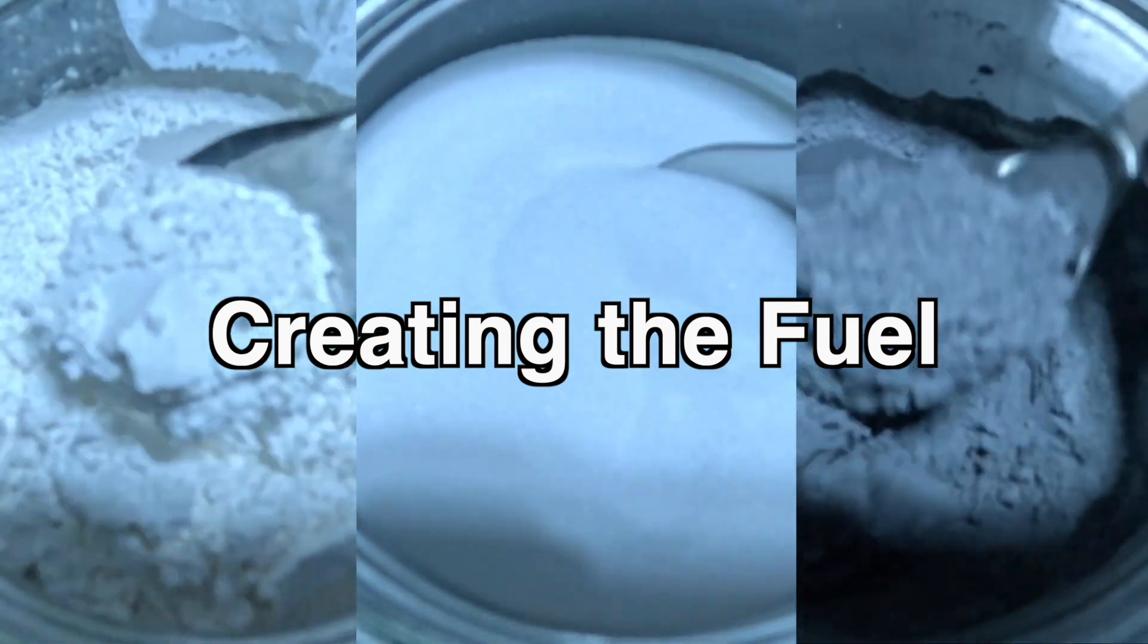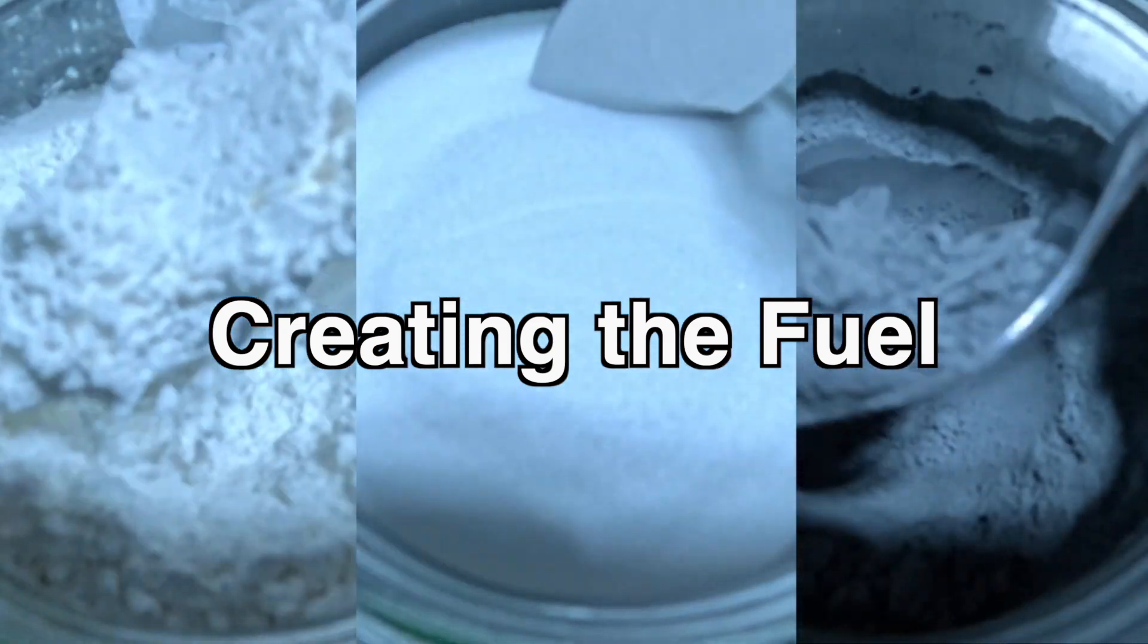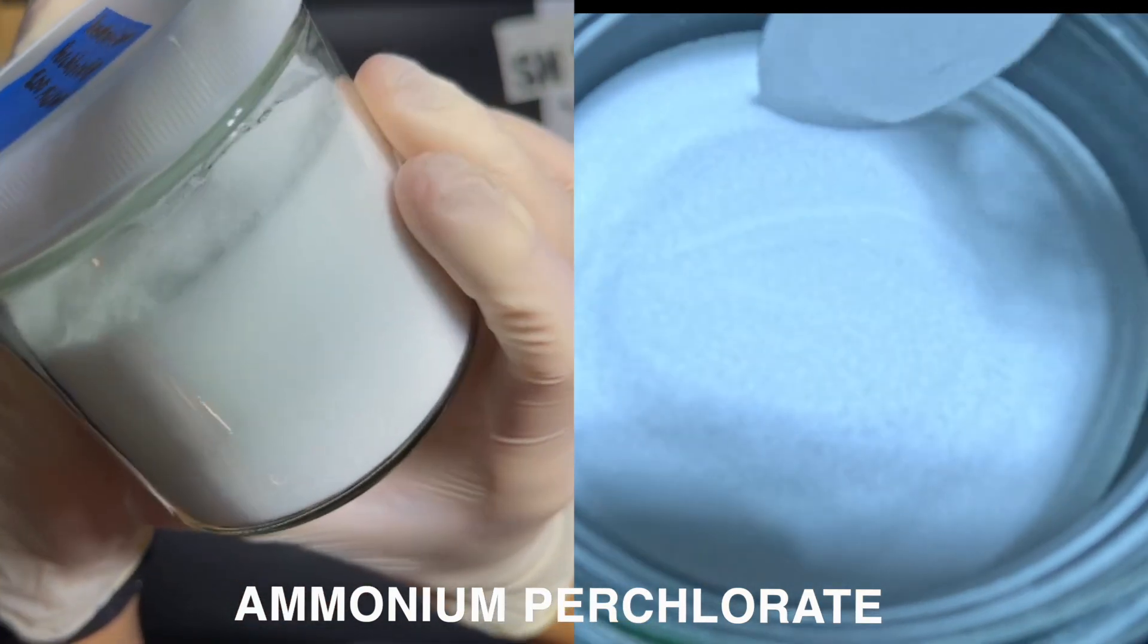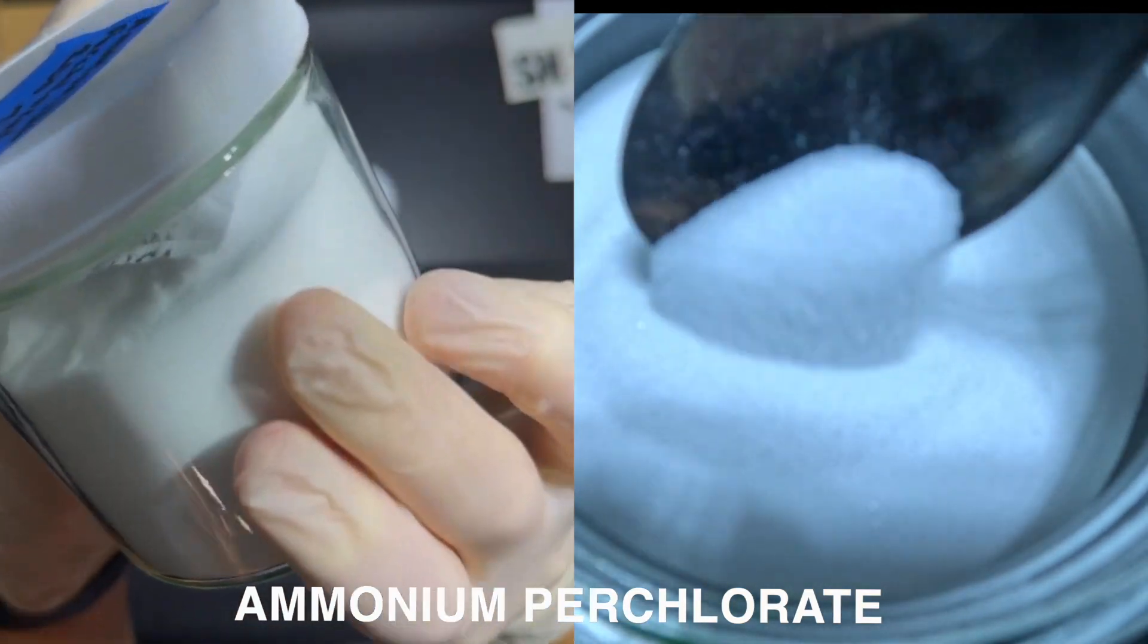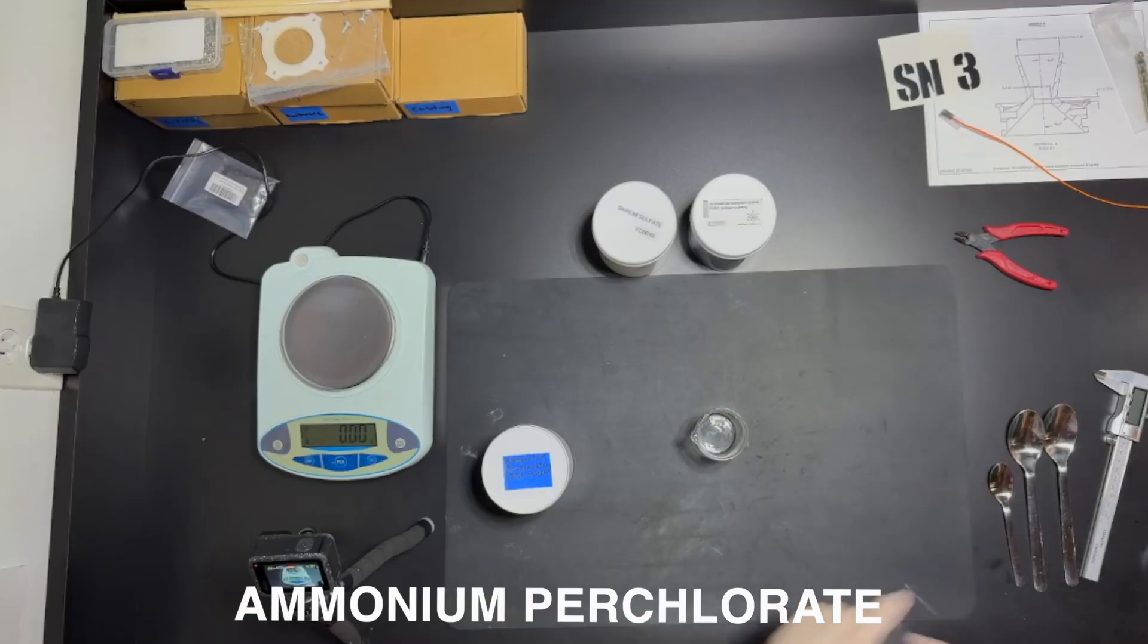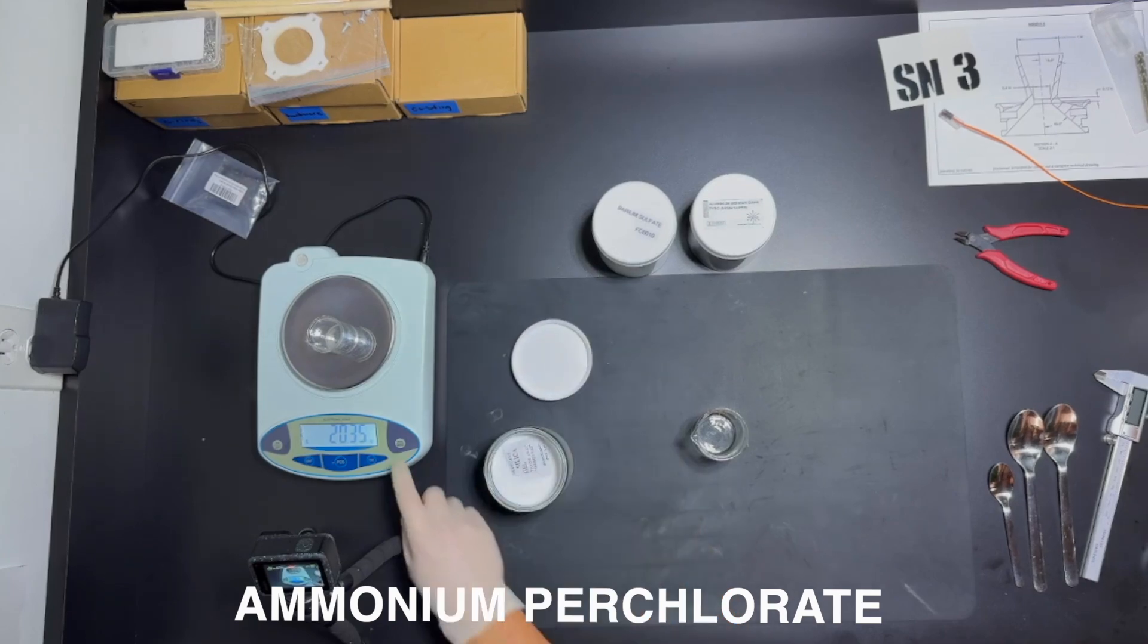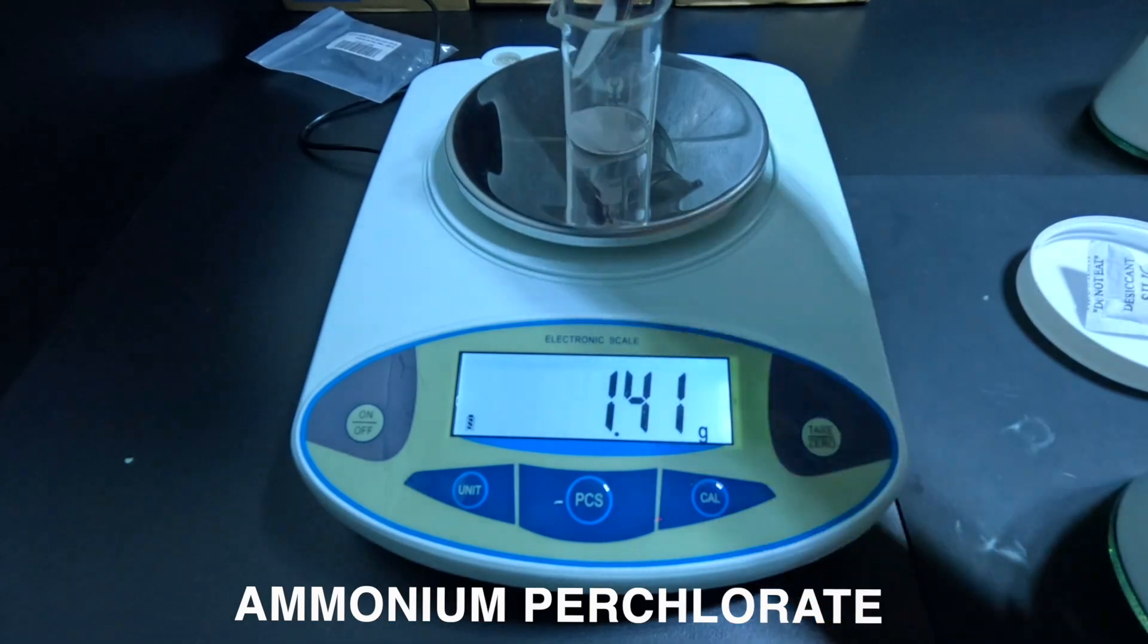Now it's time to create the fuel. First, I start by measuring out the ammonium perchlorate. The ammonium perchlorate serves as an oxidizer in this reaction. If you would like to know the ratios I use, please check the description below.